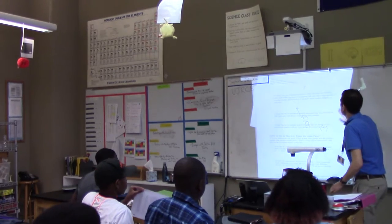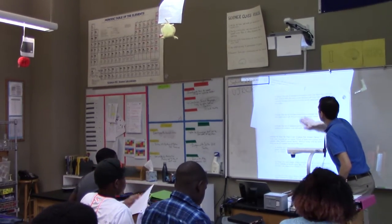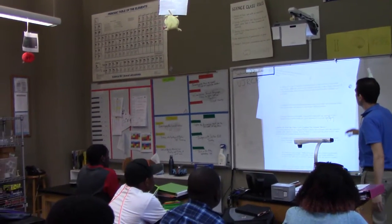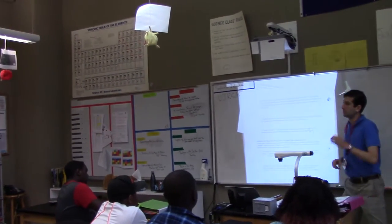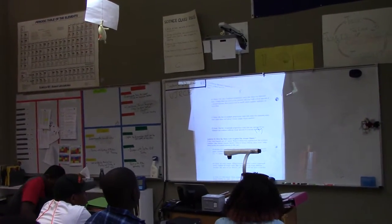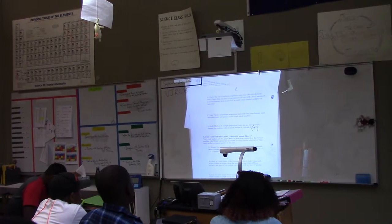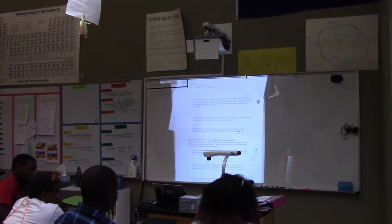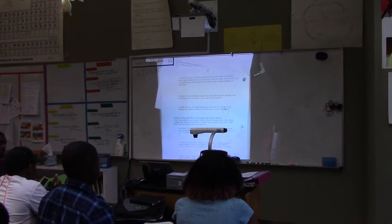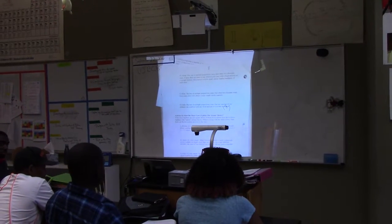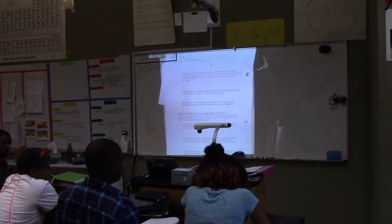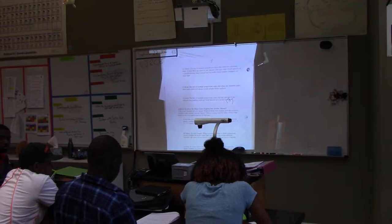So this one says when two elements react, if more than one mass can react, the masses will be small whole number ratios of each other, or whole number multiples of each other. Does anyone see a problem with this one? People who did not choose this, can you tell me why you crossed it off? Be honest, because that helps.